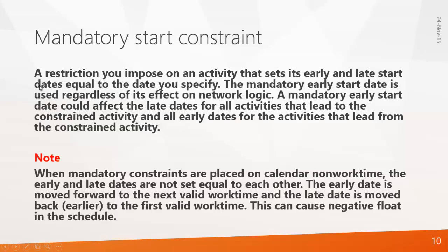The Mandatory Start constraint sets an activity's early and late start dates equal to the date you specify, regardless of its effect on network logic. A mandatory early start date could affect the late dates of all activities leading to the constrained activity and all early dates for activities leading from it. Note: when mandatory constraints are placed on calendar non-working time, the early and late dates are not set equal — the early date moves forward to the next valid work time and the late date moves back, which can cause negative float in the schedule.